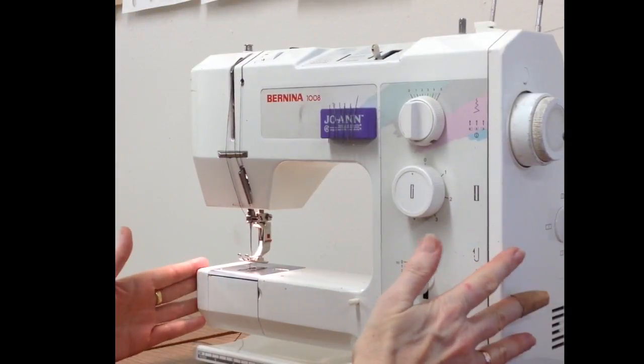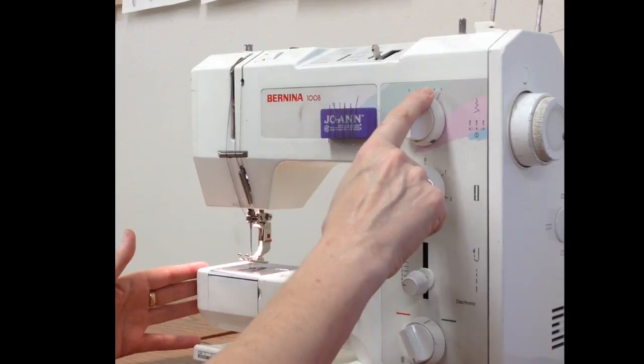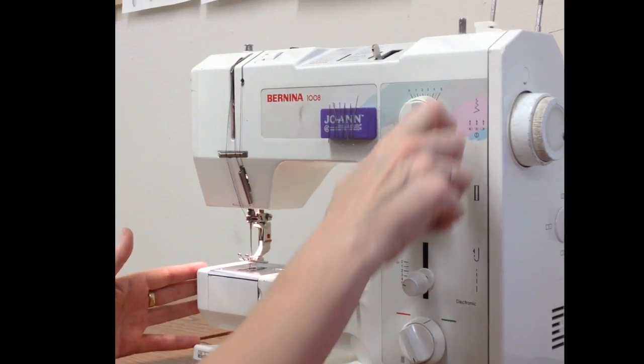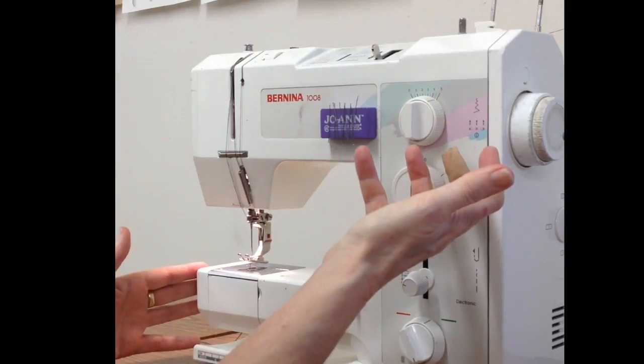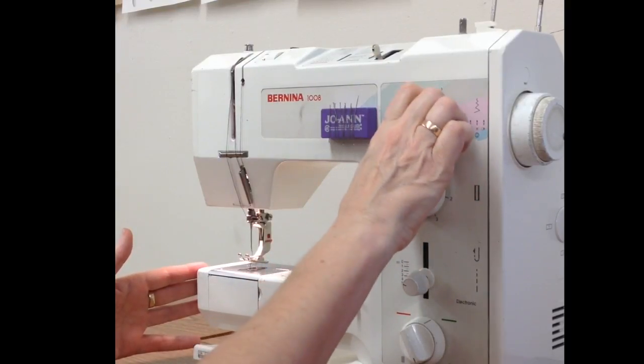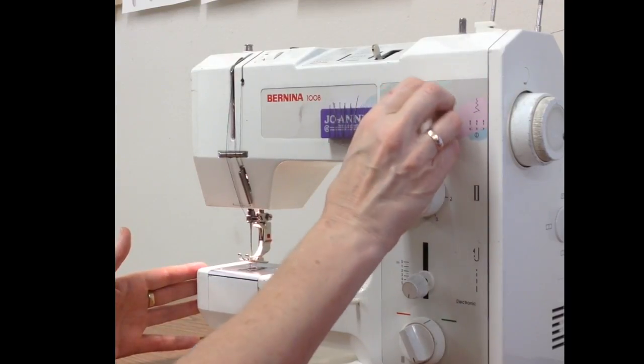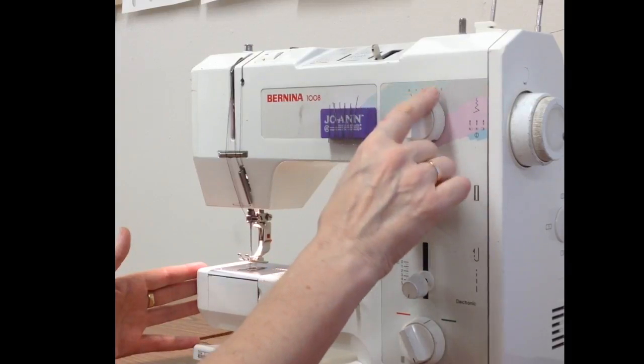When you sit at the machine, first thing you want to do is check to make sure the dials are set where you want them to be. Perhaps the person before you was on a zigzag and forgot to put that back to zero. You want to check to make sure it's at the proper stitch length that you want and the stitch width setting that you want.